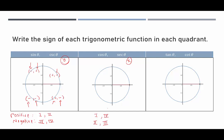Tangent and cotangent depend on both x and y, since tangent is y over x and cotangent is x over y. In quadrant one, both positive gives a positive tangent. In quadrant two, negative divided by positive is negative. In quadrant three, negative divided by negative is positive. In quadrant four, negative divided by positive is negative.